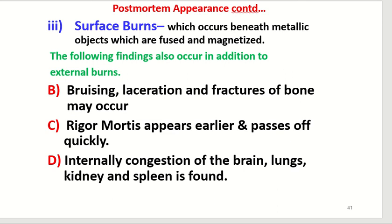Third, surface burns, which occur beneath metallic objects that are fused and magnetized. In addition to external burns, bruising, laceration, and fracture of bone may also occur. Rigor mortis appears earlier and passes off quickly. Internally, congestion of the brain, lungs, kidney, and spleen is found.